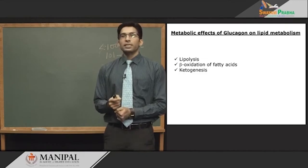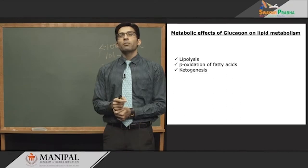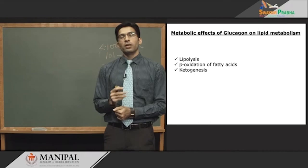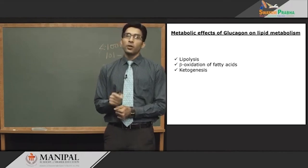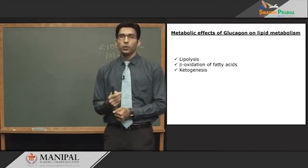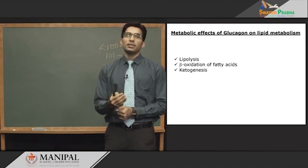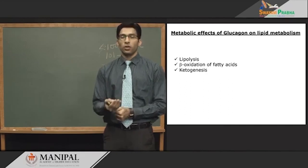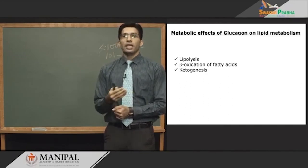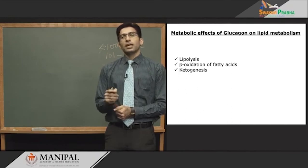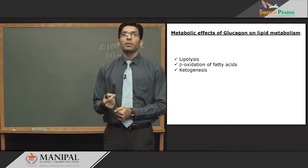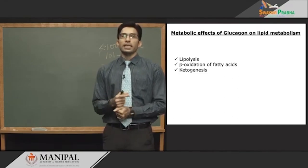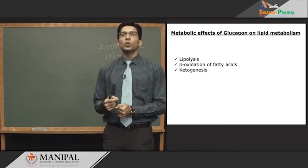Excess fatty acid released from lipolysis is taken up by albumin in the plasma and transferred to the liver. In the liver, it has two fates: either beta-oxidation of fatty acid to give tremendous energy, or lipogenesis — synthesis of triacylglycerol. The acetyl-CoA produced by beta-oxidation in such large amounts cannot be handled by the TCA cycle and will go toward ketogenesis.